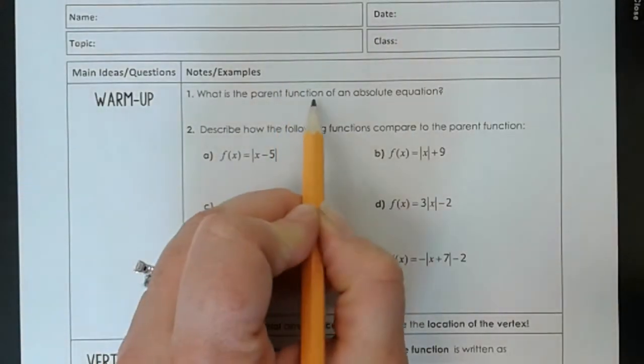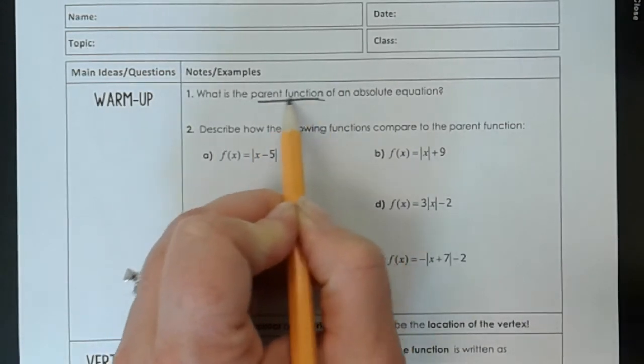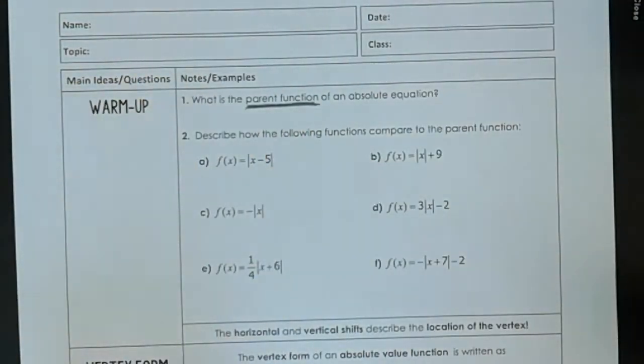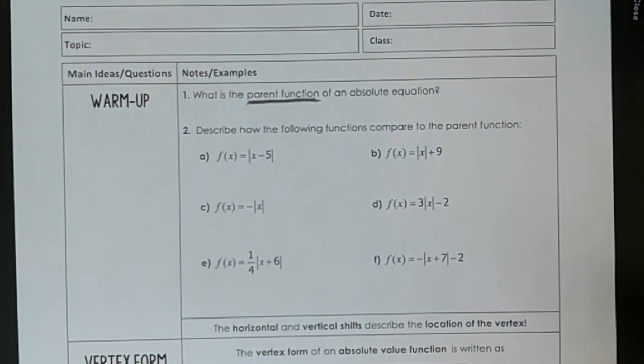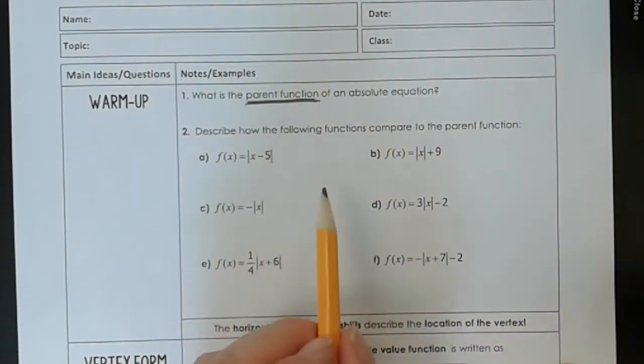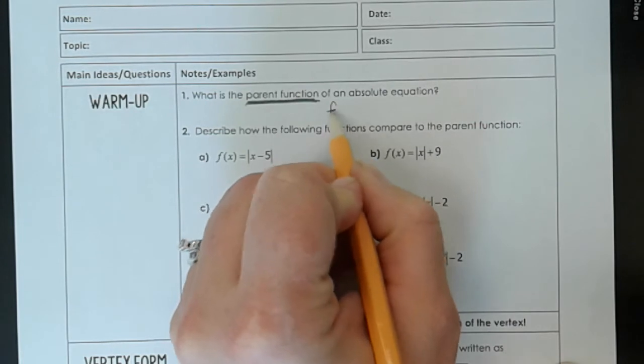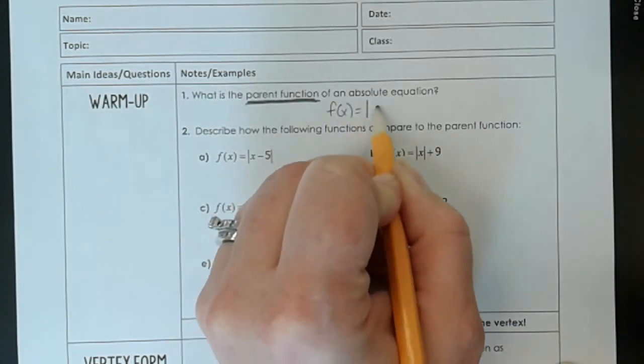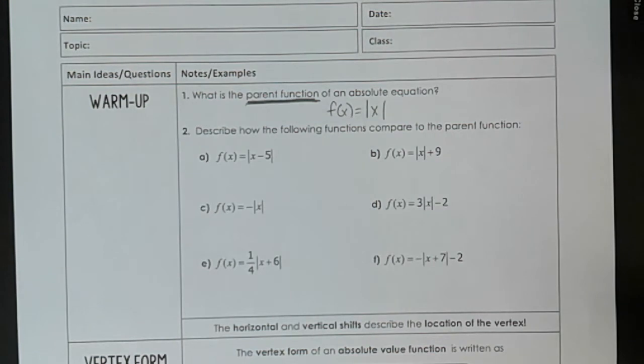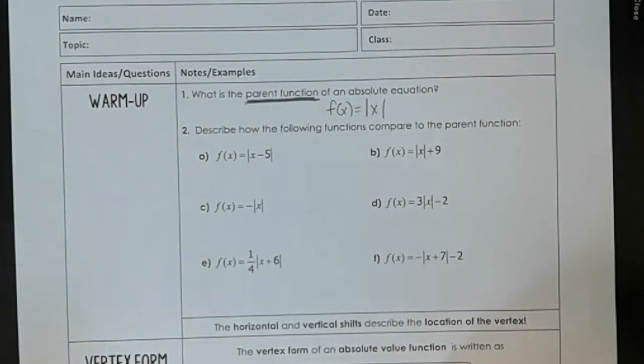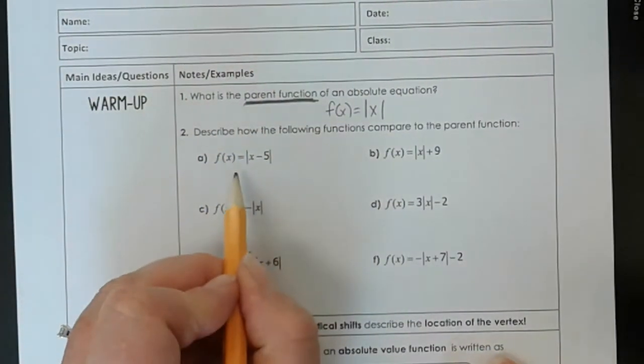Remember we talked about parent functions? The parent function basically gives us an idea of what they're going to sort of look like. So the parent function of the absolute value is f(x) equals absolute value of x. It's just a very vanilla graph. Starts at (0,0), goes up 1 over 1, up 1 over 1.